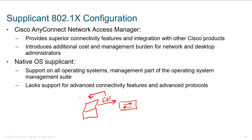The supplicant is either built into your operating system or you could use a third-party .1x client. In the Cisco world, we tend to use Cisco AnyConnect, and this is called Network Access Manager. This is fantastic because it's integrated with all the other Cisco products — we want to do things like Remote Access VPN, and it's the same client, the same interface, so it feels very similar to the users.